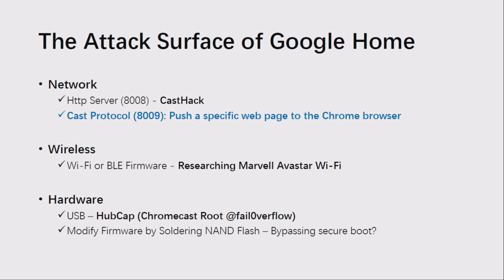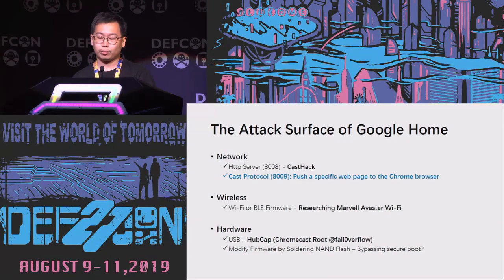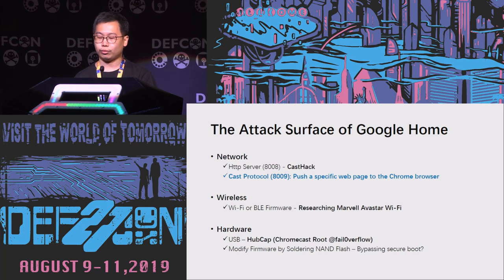Next, we introduce the attack surface of Google Home. Google Home has multiple open ports. Port 8008 is the NXTP server — we can control some basic operations through this port on the LAN. There is also port 8009, which uses the Cast protocol and is the target of our attack. Wireless protocol is also an attack surface. Google Home uses a mobile chip, so Wi-Fi and BLE firmware attacks can be tried. It is also possible to find vulnerabilities in the bootloader to load malicious firmware.